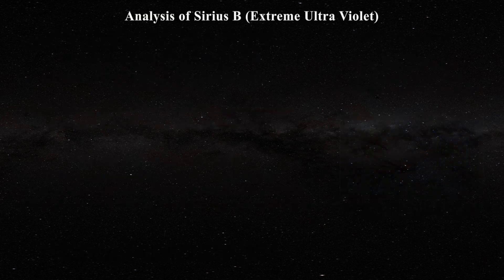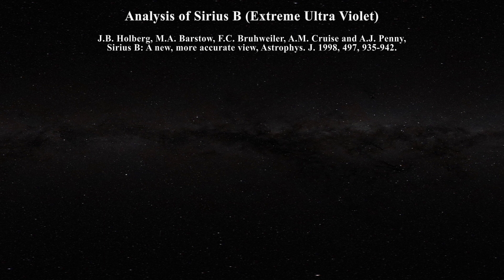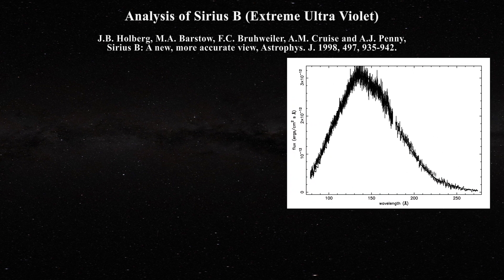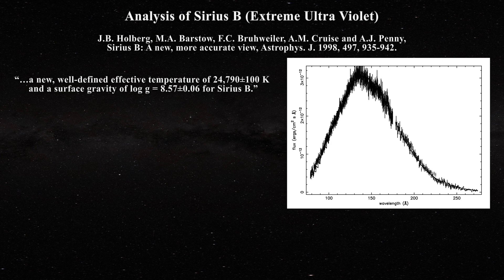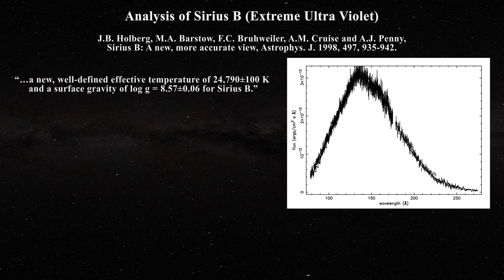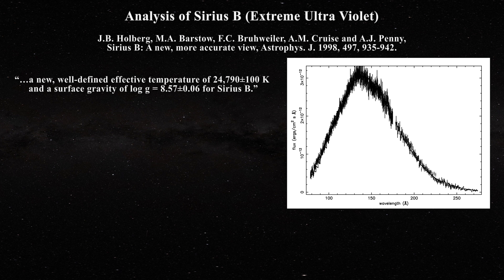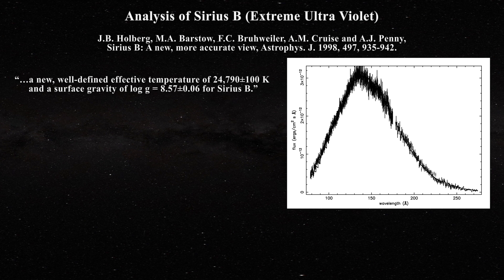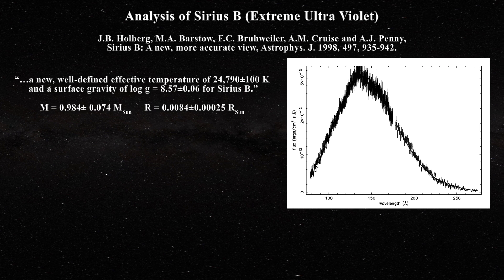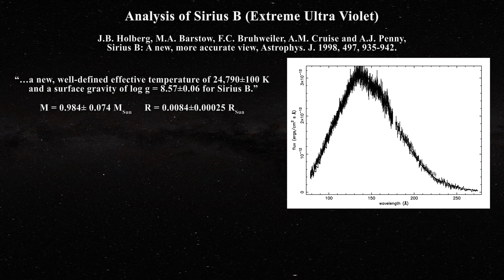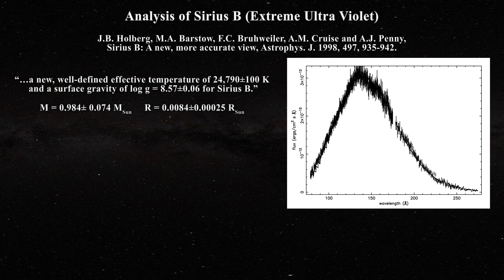Leaving behind x-rays and moving to the UV, we turn to a paper published by Holberg et al. in 1998. They examine the UV spectrum of Sirius B and report a new well-defined effective temperature of 24,790 plus or minus 100 Kelvin and a surface gravity of log g equals 8.57 plus or minus 0.06. Using a parallax from Hipparcos and a previously published redshift, they compute a mass of 0.984 plus or minus 0.074 solar masses and a radius of 0.0084 plus or minus 0.00025 solar radii.